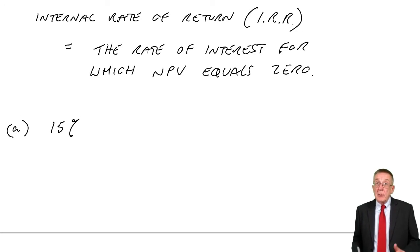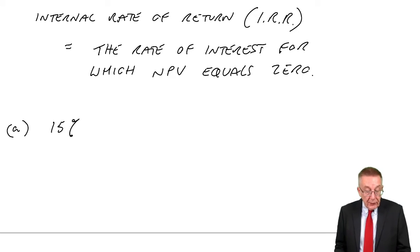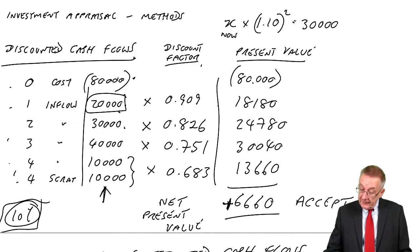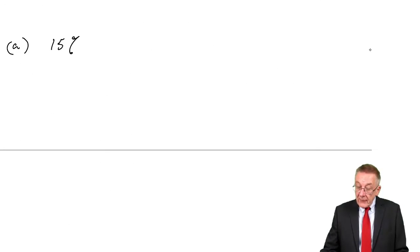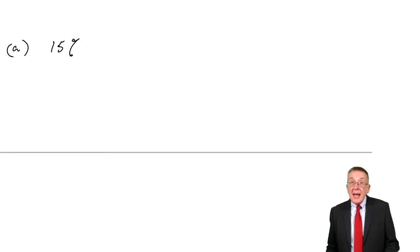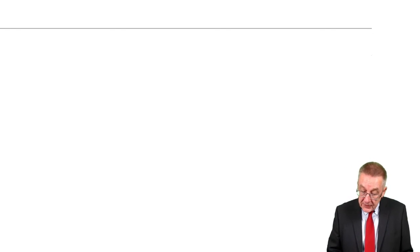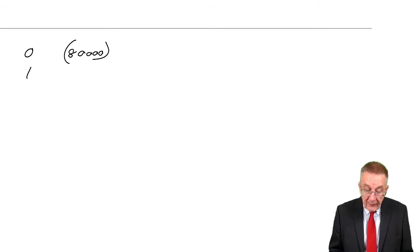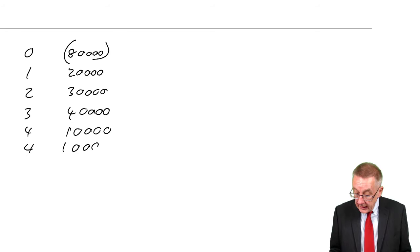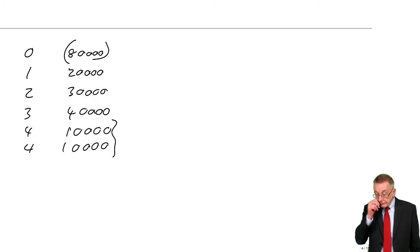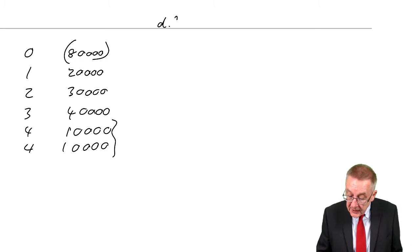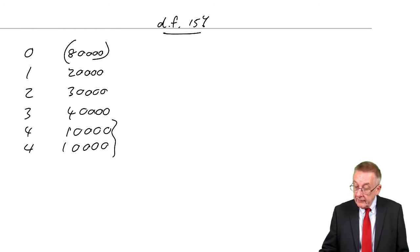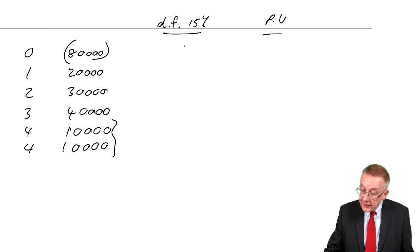We want an internal rate of return, but before I explain how we get it, part A of example 3 asked us to calculate the NPV of the project at 15%. We've done it at 10%, it was positive, we accept. We've now made guesses at 15%. So let's see what the NPV is at 15%. We know the cash flows: 80,000 outflow at time 0, inflows of 20,000, 30,000, 40,000, 10,000, and then another 10,000 at time 4 from the scrap.